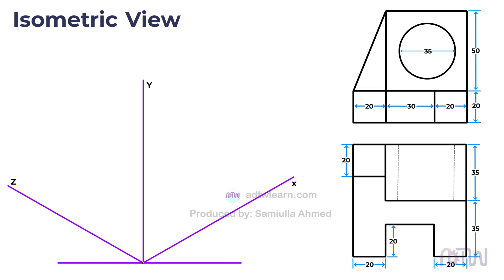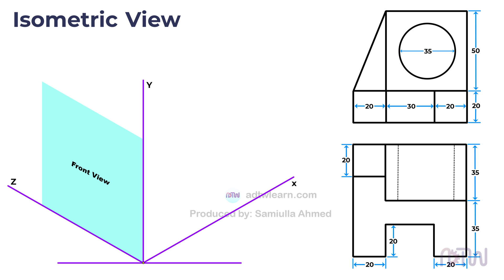With these three isometric axes in place, we can now construct the isometric view of the object. We need to decide whether to draw the front view in the x-y plane or the y-z plane. It's important to remember that the front view should only be drawn in these two planes, and never in the x-z plane.